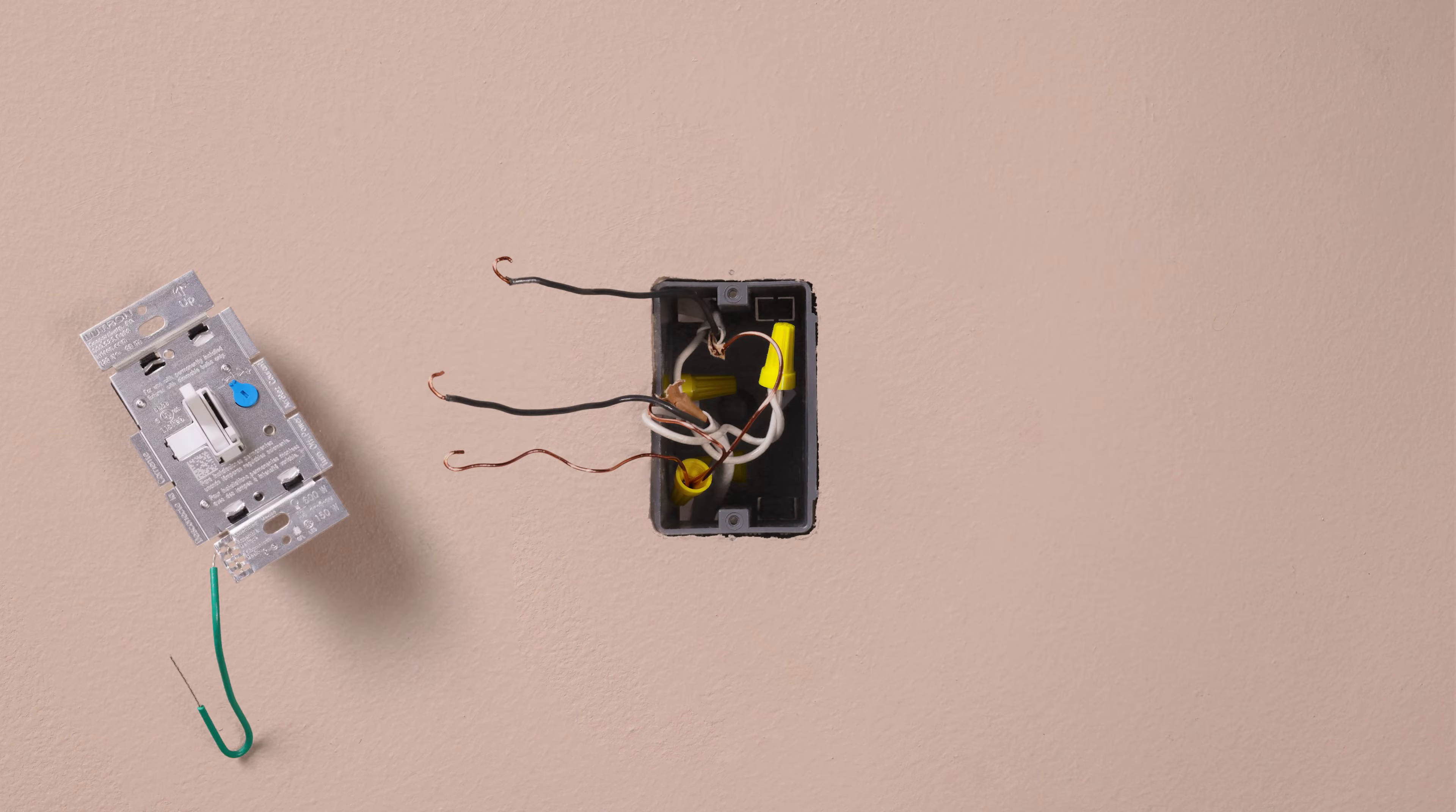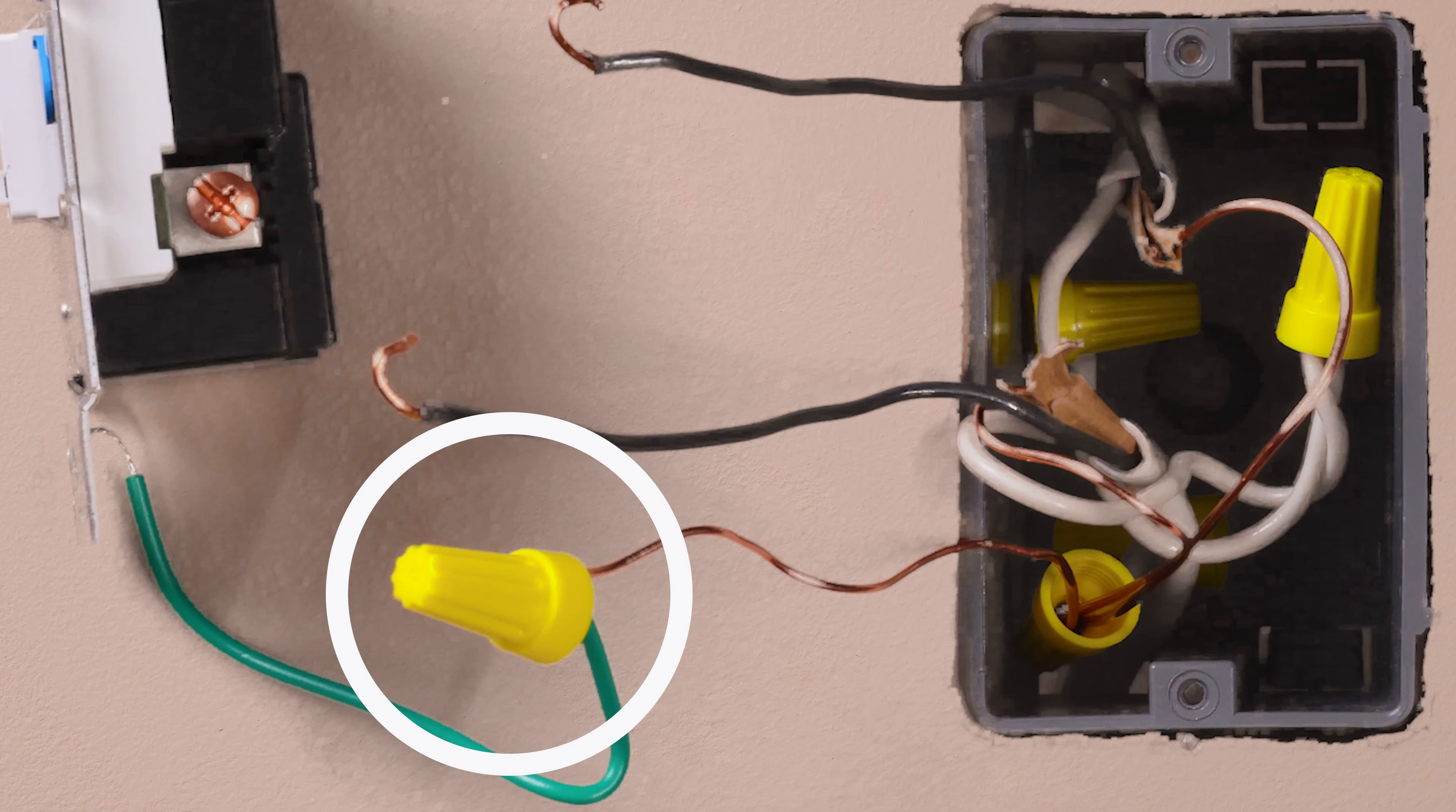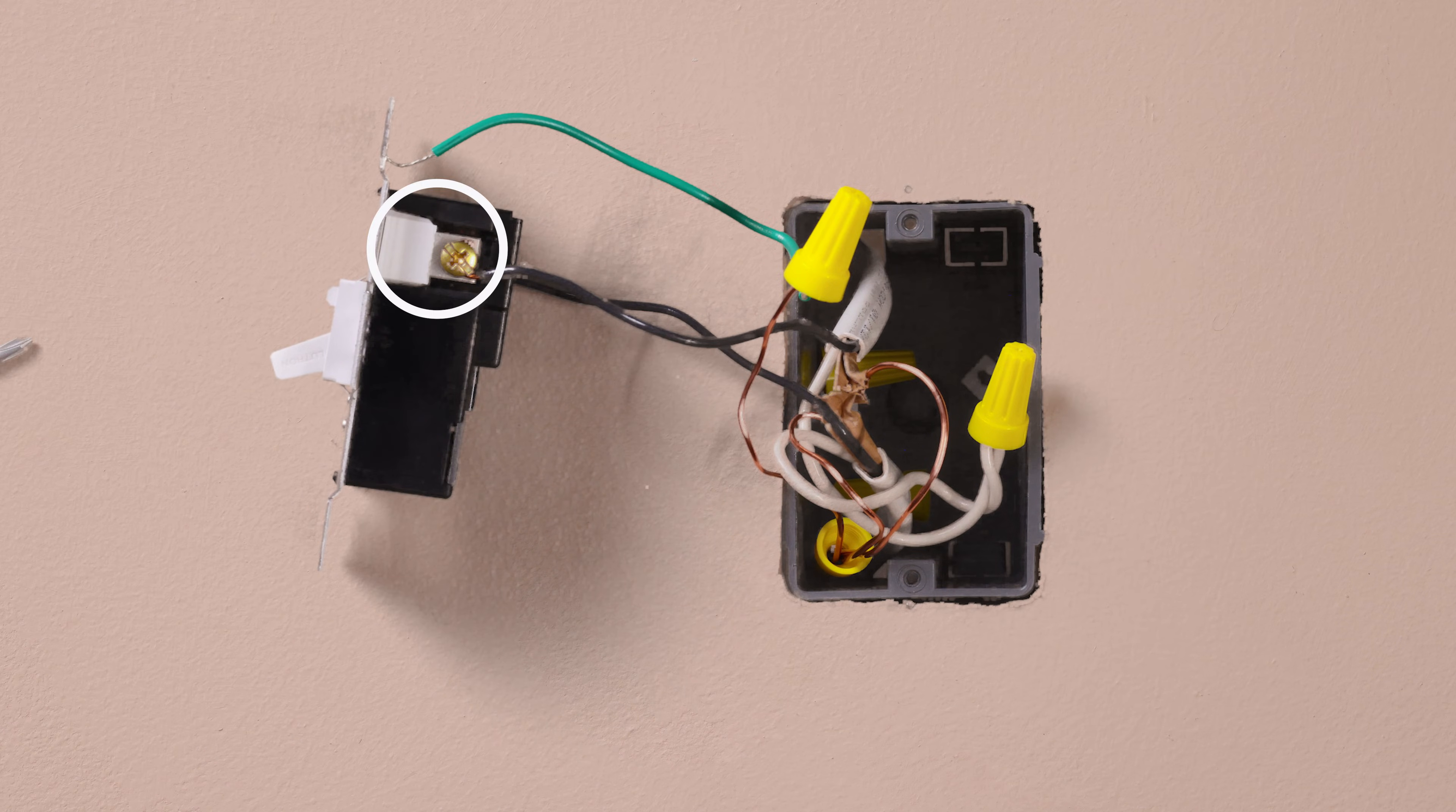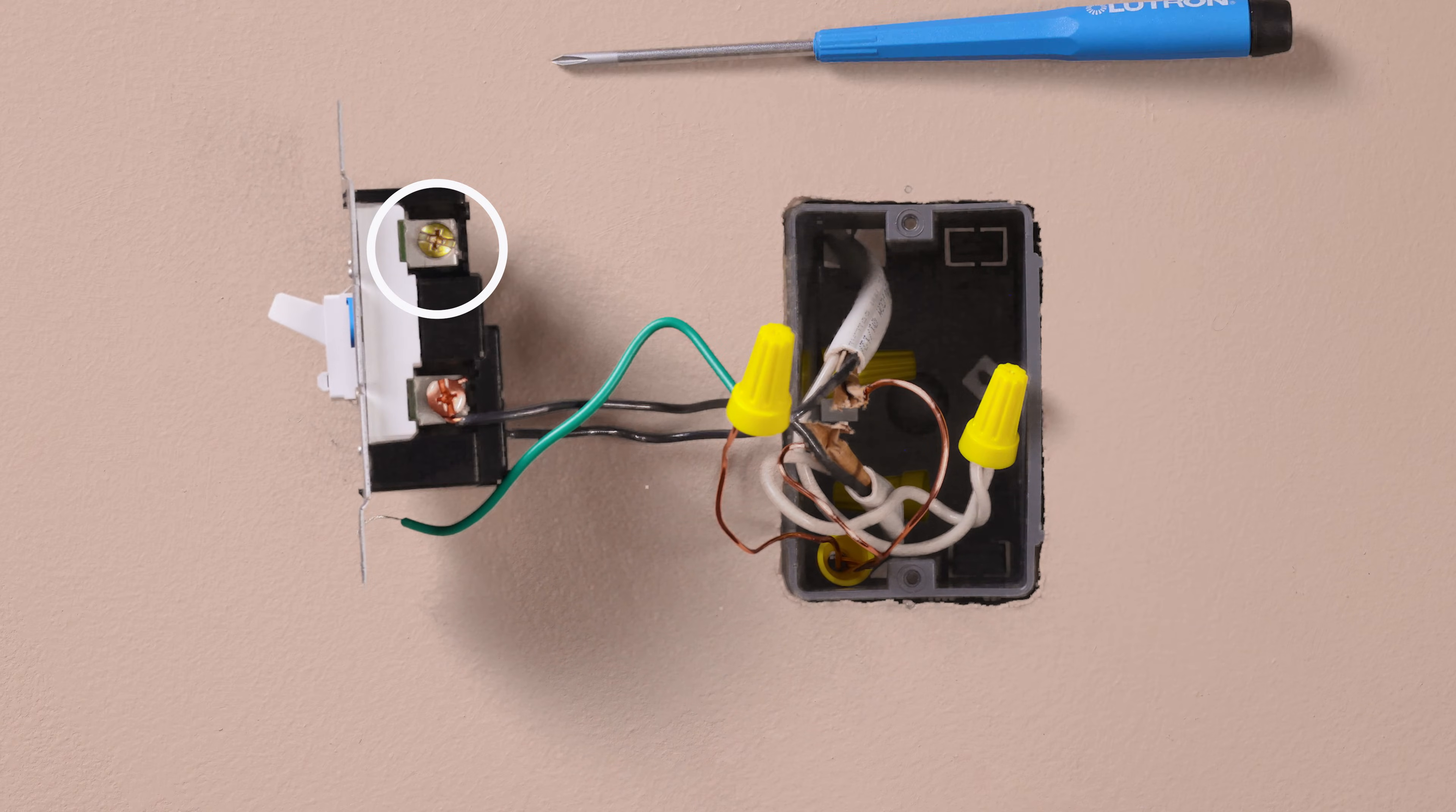Connect the ground wire, typically a bare copper wire, to the green wire on the dimmer. Connect one of the two wires to the copper screw and the remaining wire to the brass screw on the opposite side of the dimmer. You won't be using the second brass screw, so just tighten it down.